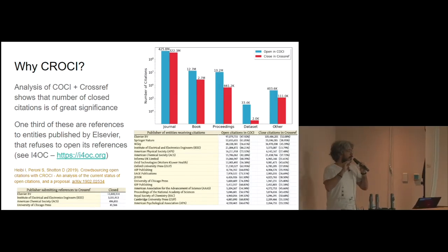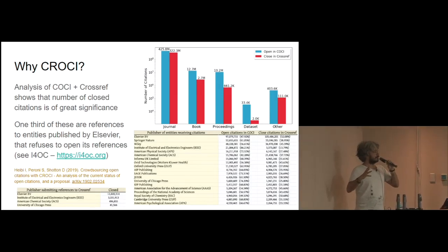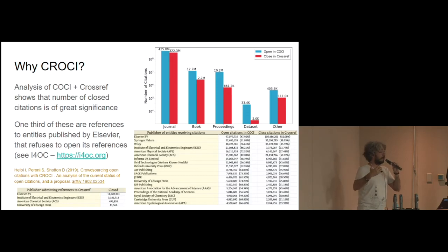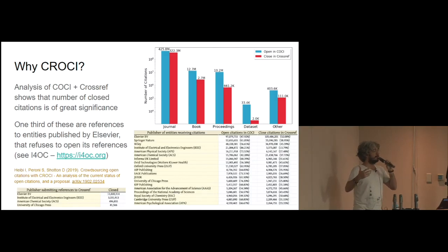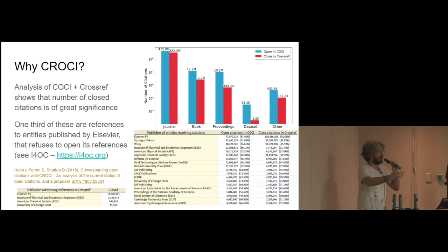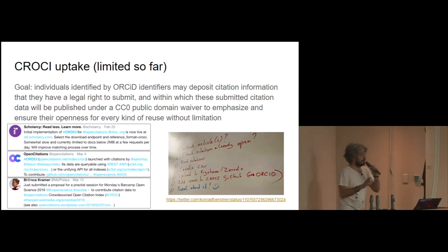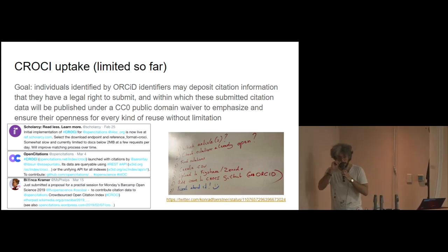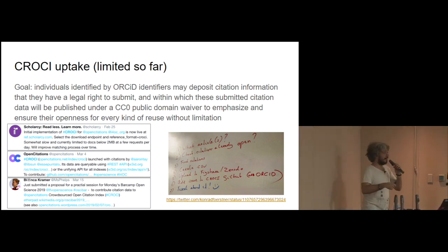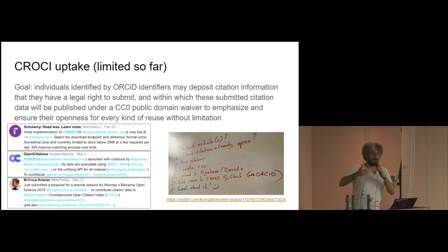What we wanted to do is try an experiment: to make available another index accompanying COCI that we named CROCI, or Crowdsourced Open Citation Index, where we ask people to submit their own citations — because you own your citations if you publish a paper, independently from the publisher. Even though the uptake of CROCI is very limited so far and we have just a small number of citations there, we have seen many people experimenting with it and trying to produce this data so we can publish it all under CC0 within this new index.